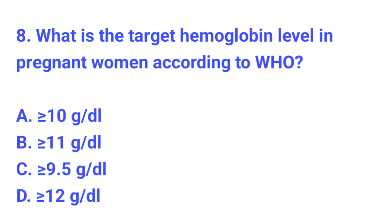Question number 8. What is the target hemoglobin level in a pregnant woman according to WHO? The correct answer is B, greater than or equal to 11 grams per deciliter.